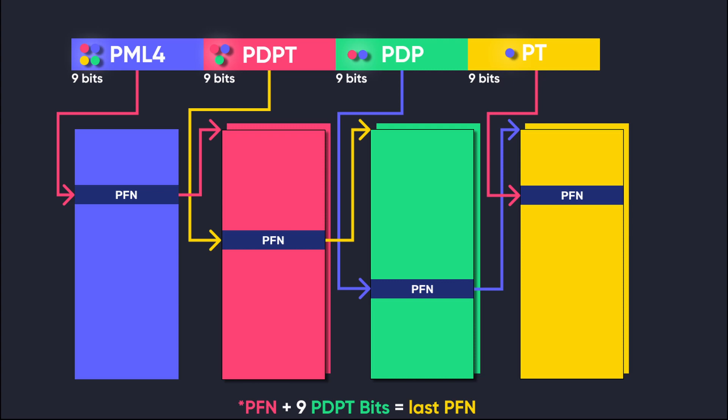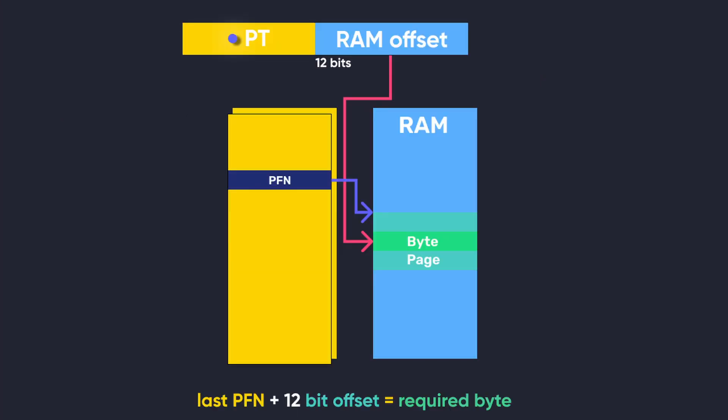What happens after the translation has reached the page table is a bit different. The page frame number in this case directly points to the start of the address of the physical memory page to which this virtual memory address belongs. Getting the start of the page is not enough to access the required data, so the last 12 bits are used to find the specific byte which was requested.